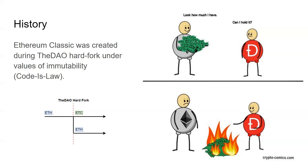One side of the community said they should do a hard fork and return the money back to those DAO ICO investors. This would break the original Ethereum agreement — it would break blockchain immutability, and arguably you could say censorship, because the question becomes: is the Ethereum network responsible for investors making bad decisions or poorly written smart contracts? A lot of people could argue yes or no.